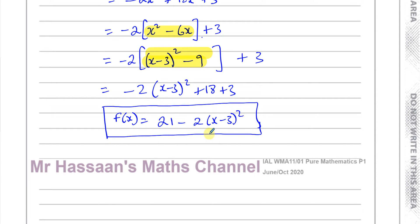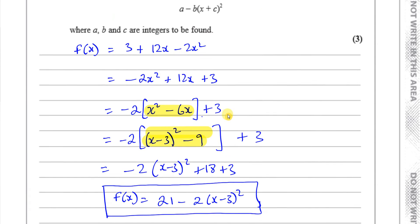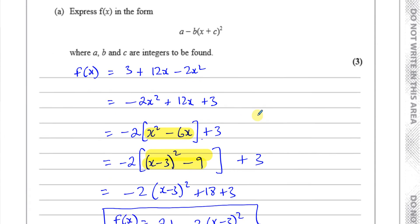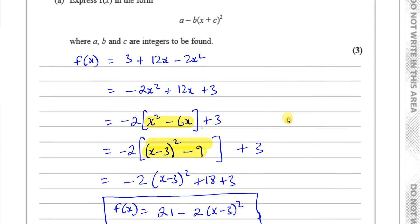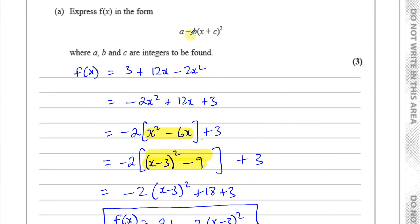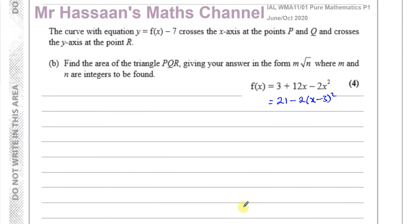So f(x) = 21 - 2(x - 3)² all squared, where A, B, and C are integers to be found. You can leave it in that form since the question says express it in this form — there's no further calculation required.